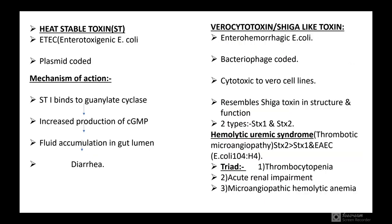The heat stable toxin of E. coli is also secreted by enterotoxigenic E. coli and is plasmid coded. Its mechanism of action: the heat stable toxin 1 binds to guanylate cyclase, which causes increased production of cyclic GMP, leading to fluid accumulation in the gut lumen and causing diarrhea.